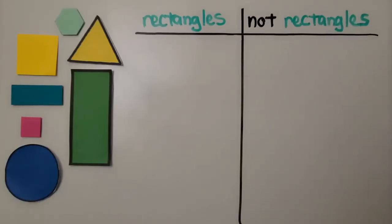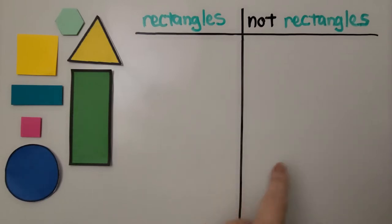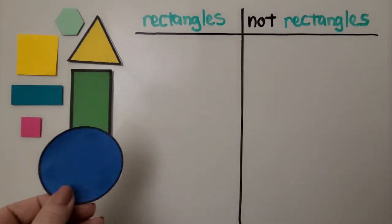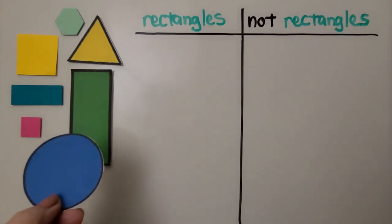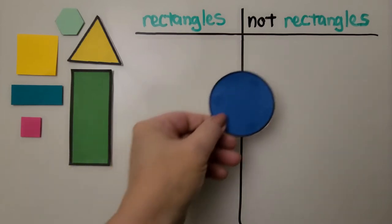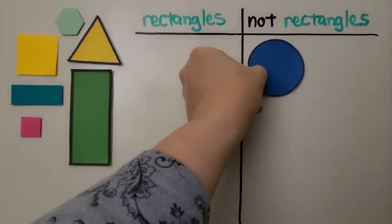We can sort these shapes into sets of rectangles and not rectangles. To be a rectangle, it needs four square corners — four square vertices. So this shape has no square corners, it has no vertices. That's not a rectangle. That's a circle — we can put it right here.